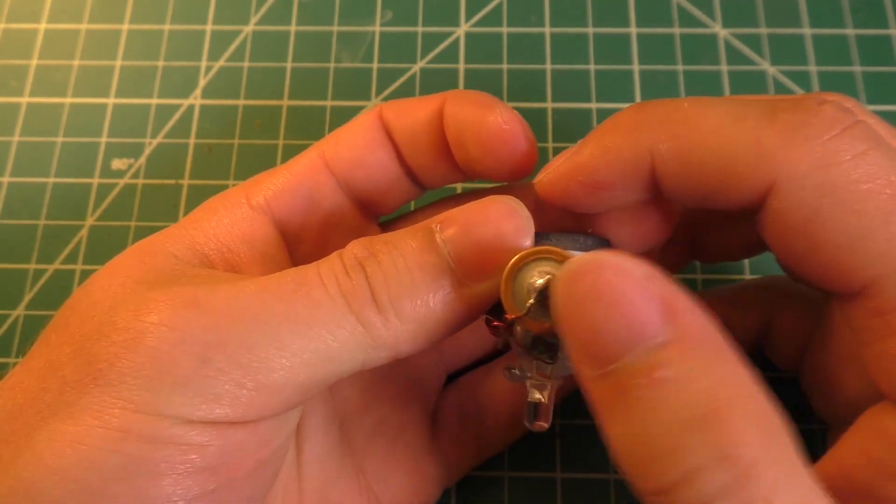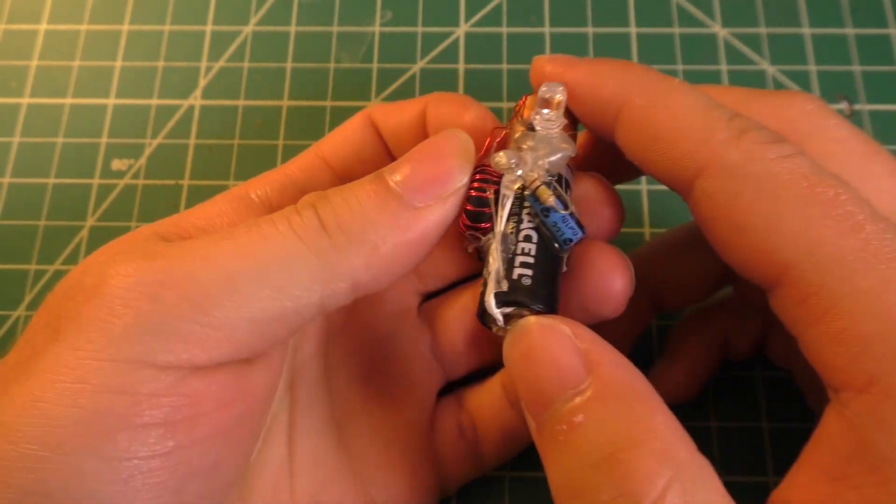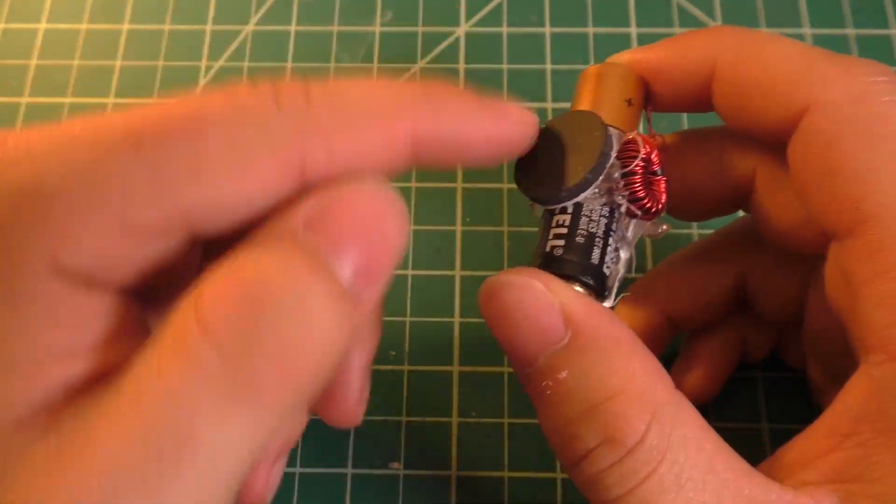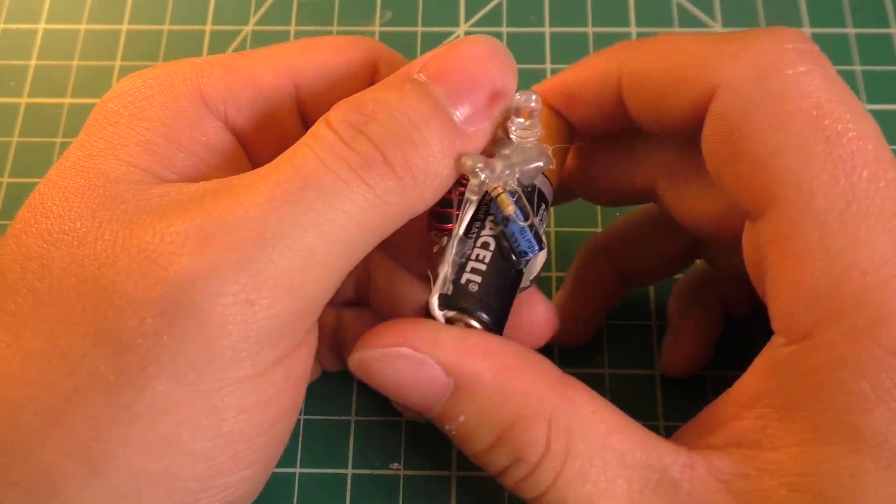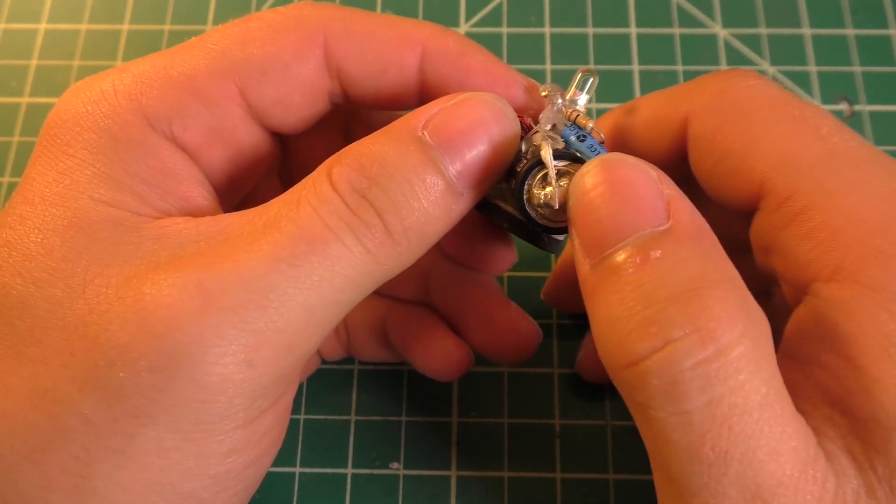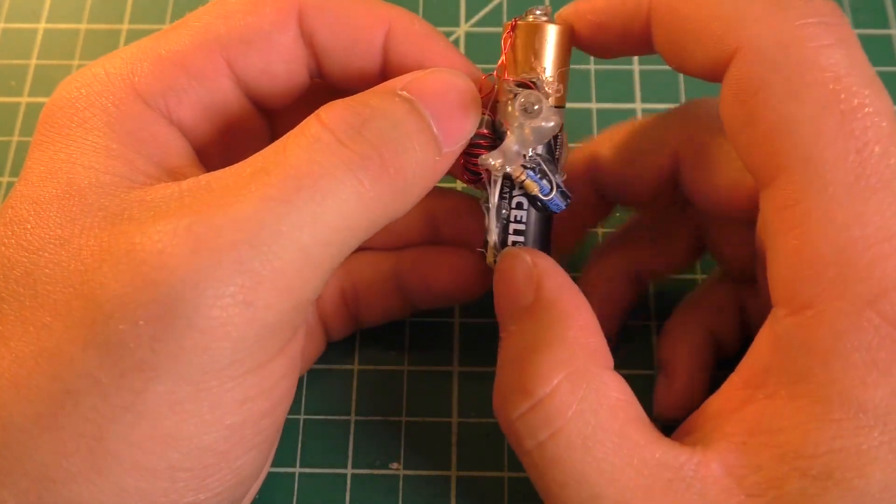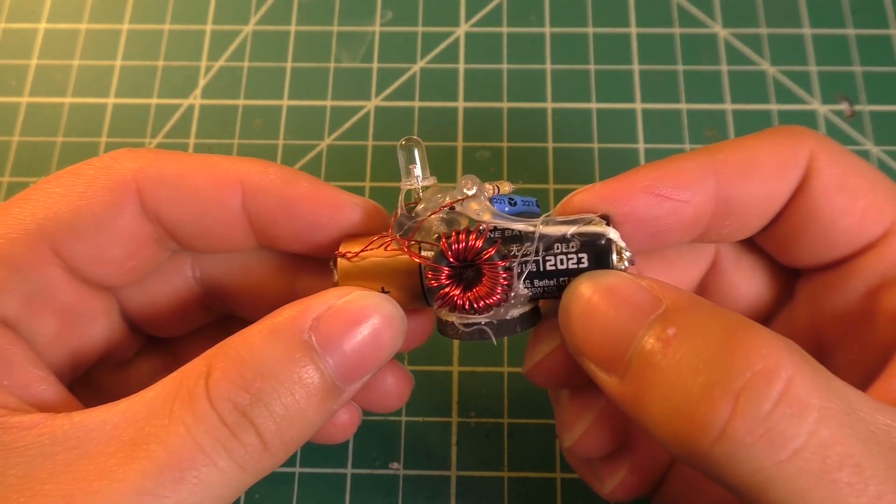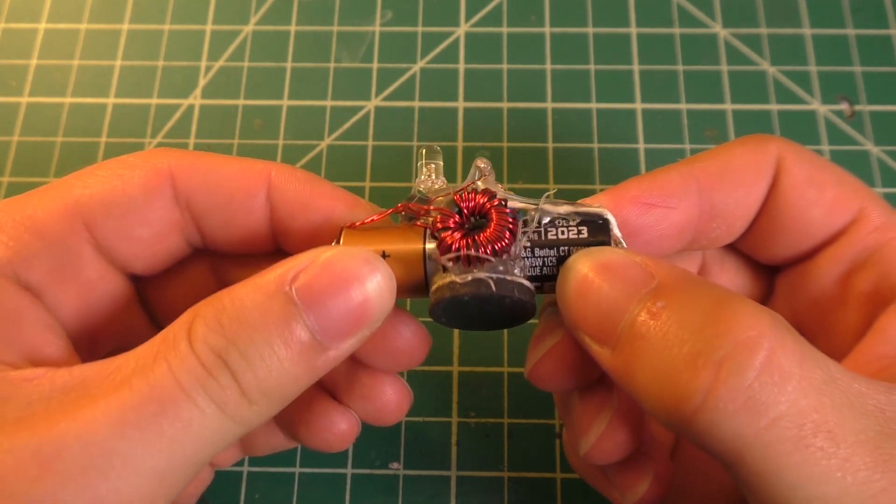Now when I built this I went ahead and just soldered it directly to the battery and everything is wired up dead bug style and glued onto the side of the battery, and I've got a magnet on the back of it here so I can just stick it to a refrigerator. Now soldering it straight to the battery is probably not the greatest idea ever but hey it hasn't leaked yet, and if anyone's curious the expiration date on the battery is December 2023.